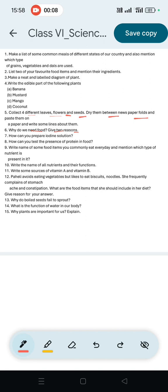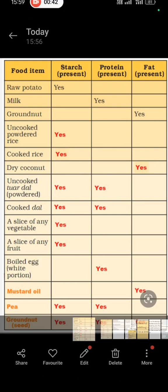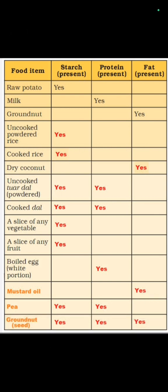Question number 9: Write the names of some food items you commonly eat everyday and mention which type of nutrient is present. Table columns: food item, carbohydrates, protein, fat. Examples: raw potato — starch/carbohydrates; milk — protein; groundnut — fat; uncooked rice — starch/carbohydrates; cooked rice — carbohydrates; dry coconut — fat.